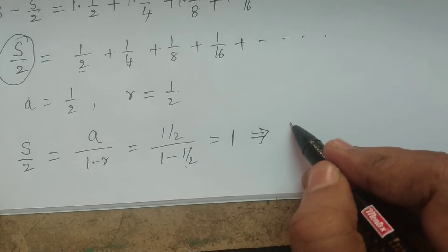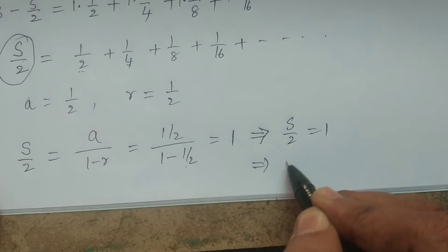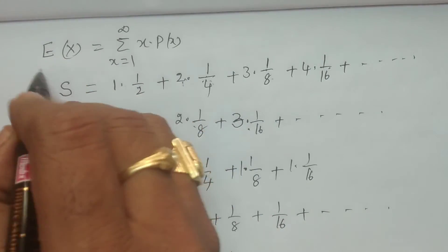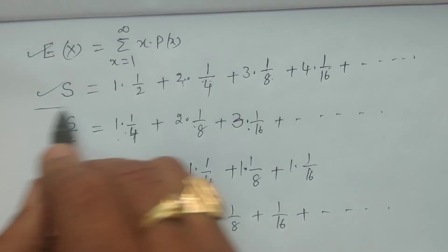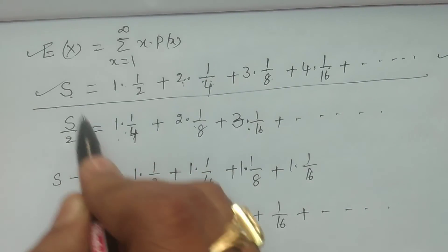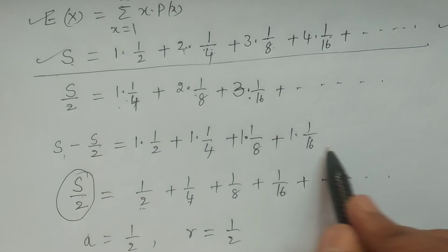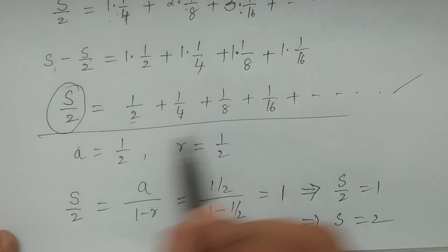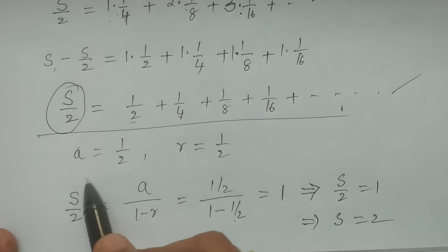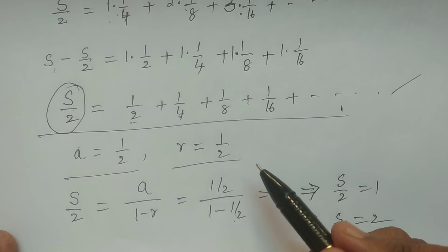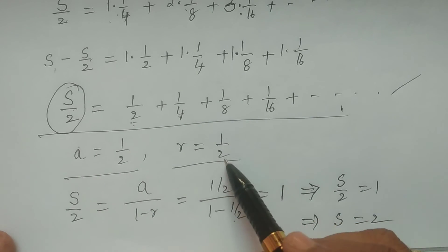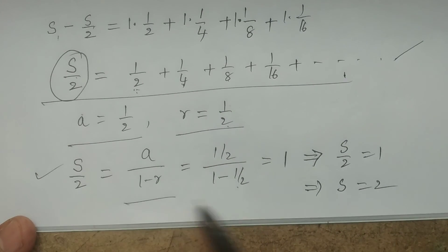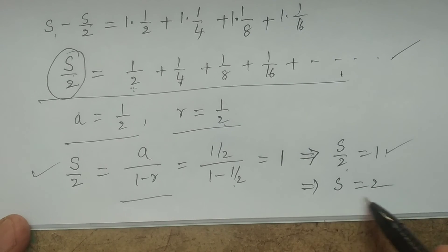Therefore, S/2 = 1, which implies S = 2. That is our required value. Expectation of X equals S, so we have calculated it as 2. To summarize: we let S equal E(X), computed S/2, subtracted to get the geometric series pattern, and used the formula A/(1−R) to find S/2 = 1, hence S = 2.